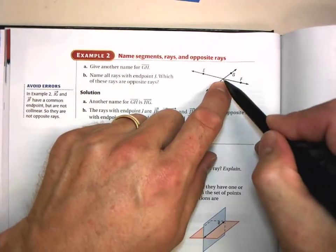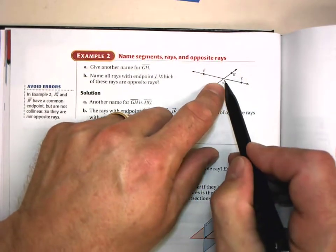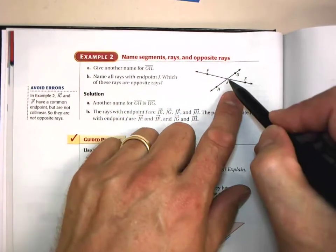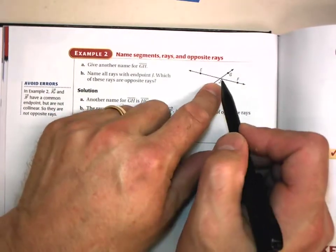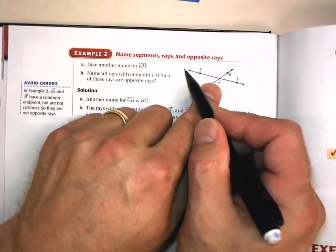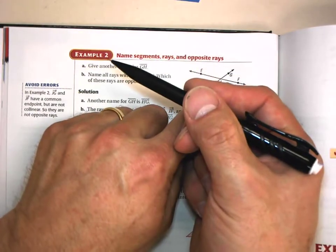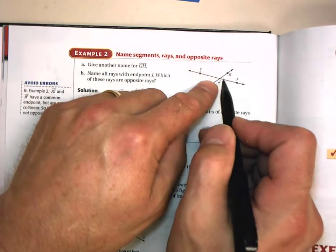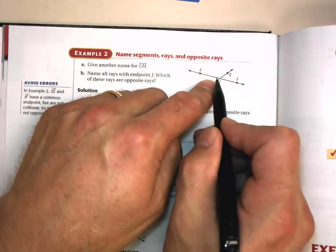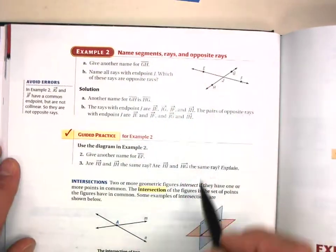So ray JE does. Also ray JG, and ray JF, and ray JH. And in fact, you remember that what we just learned, that ray JE going off in this direction to the left is an opposite ray with ray JF going off in this direction to the right.